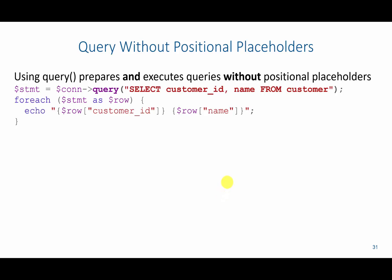For example, this query just selects the customer ID and name from the customer table with no user interaction, so we can say connection->query(). This is essentially like running the prepare and execute statements in a single command. It would then loop through and grab the customer ID and the name associated with each record.